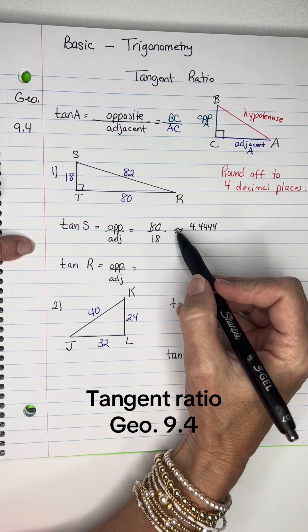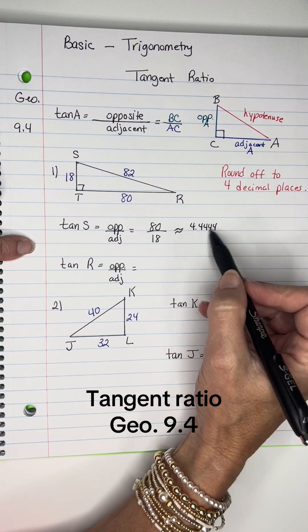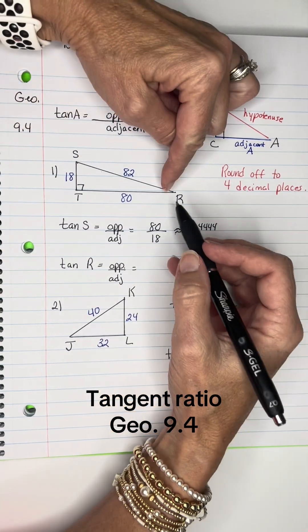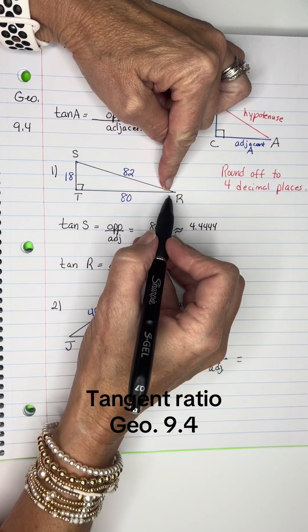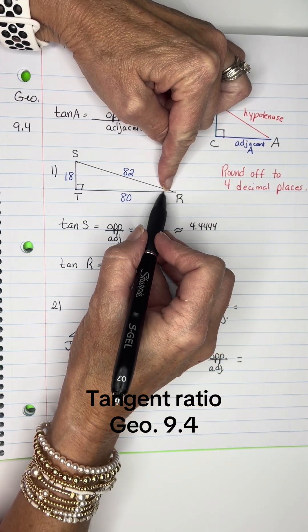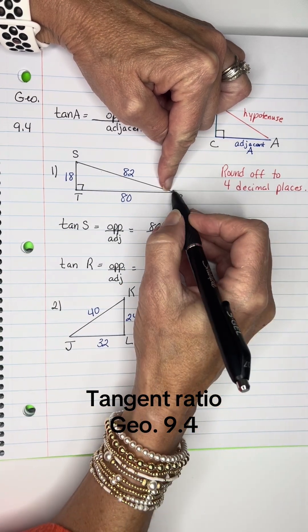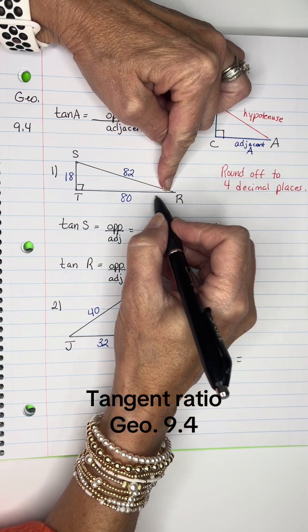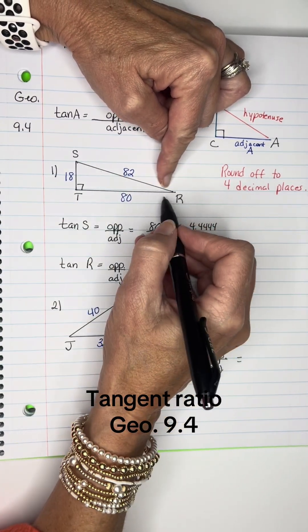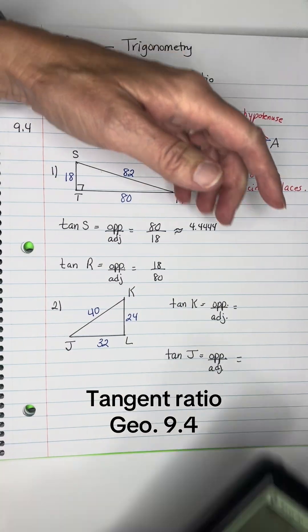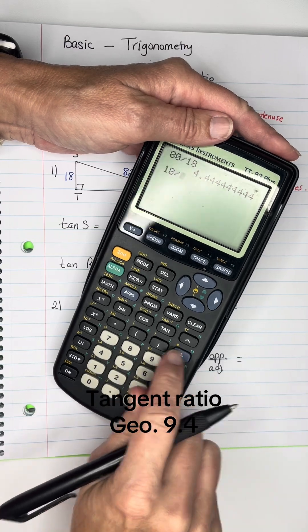Now for tangent of R. Coming from this angle, the opposite leg is 18, and the adjacent is 80—not the hypotenuse. Notice these values are reversed from before. So we have 18 divided by 80.